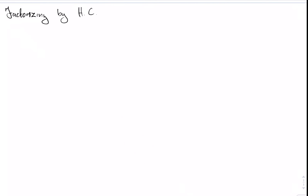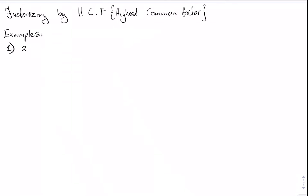Let's get into factorizing by the HCF — the highest common factor. For example one, we have two x plus two y, which equals two multiplied by x plus y. Remember the definition of factorizing: we're taking the expression and rewriting it as a product of its factors — here, two is a factor and x plus y is a factor.